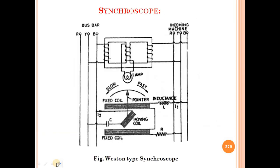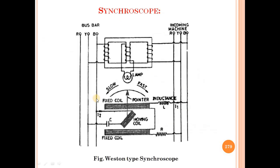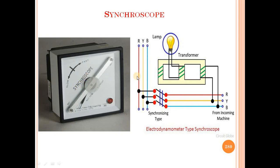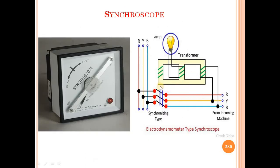We discussed the diagram of the synchroscope — the western type synchroscope. Here I have added slides and the actual photograph of the synchroscope. This is the pointer, this is the slow position, and this is the fast position. This is the fixed coil and this is the moving coil. You can also use this diagram — the electro-dynamic type synchroscope.